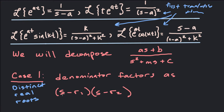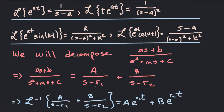If the denominator factors as, say, (s minus 2)(s minus 3), that's the first case — two distinct real roots: (s minus r1) and (s minus r2). The partial fractions we use are A over (s minus r1) plus B over (s minus r2). When we take the inverse Laplace transform, the first partial fraction gives A·e^(r1·t), and the second gives B·e^(r2·t). So when we can decompose into two distinct real roots, we just get two exponential functions.